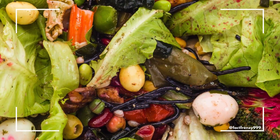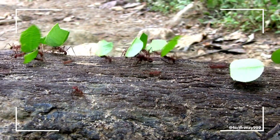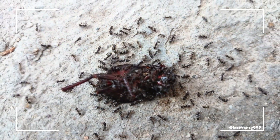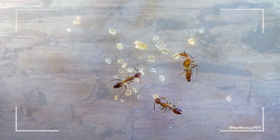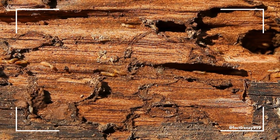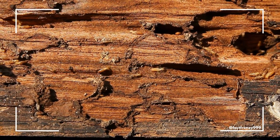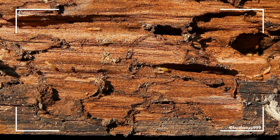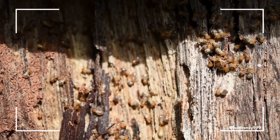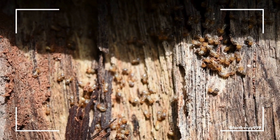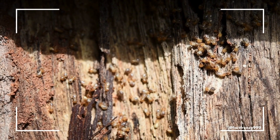Now let's talk about food. Ants are omnivores, which means they'll eat just about anything — from plants and seeds to insects and sugary substances. Termites, on the other hand, are detritivores. They primarily feed on cellulose, a component of wood, paper, and plant material. This makes termites infamous for their ability to cause serious structural damage to homes and buildings.